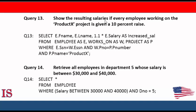Query number 13: Show the resulting salaries if every employee working on the Product X project is given a 10% raise. We're selecting E dot F-name — that E is an alias, and in the FROM statement we see 'employee as E'. We select the employee's first name, last name, and then use the operation 1.1 times the employee's salary, aliased as 'increased salary' to replace the column name. We pull from the employee table and use WHERE to join and filter everything from Product X. This shows how we can use the multiplication operator within our query.